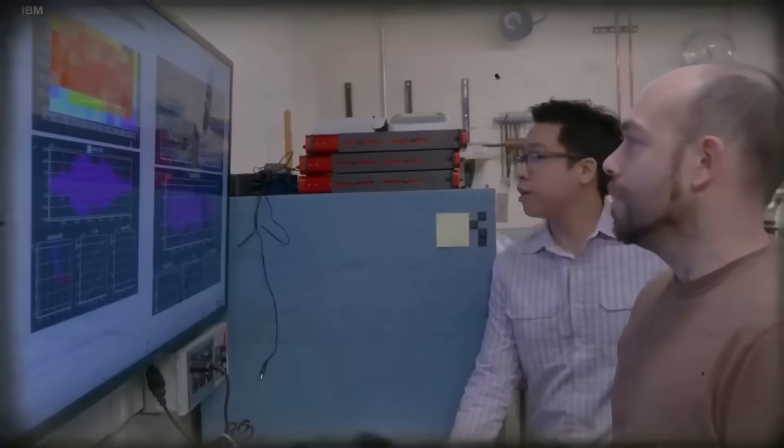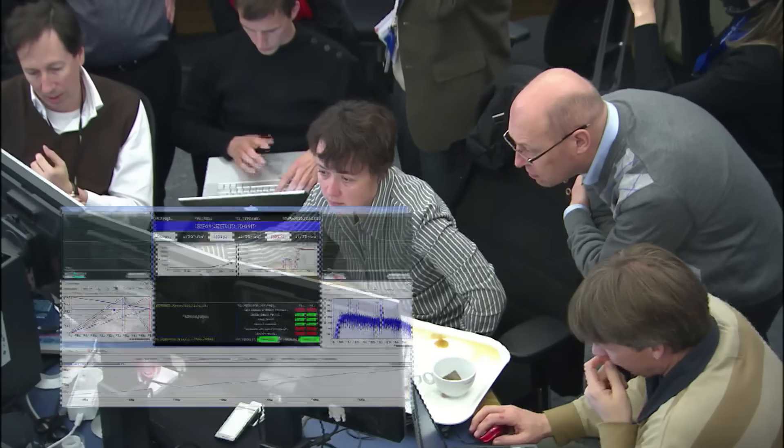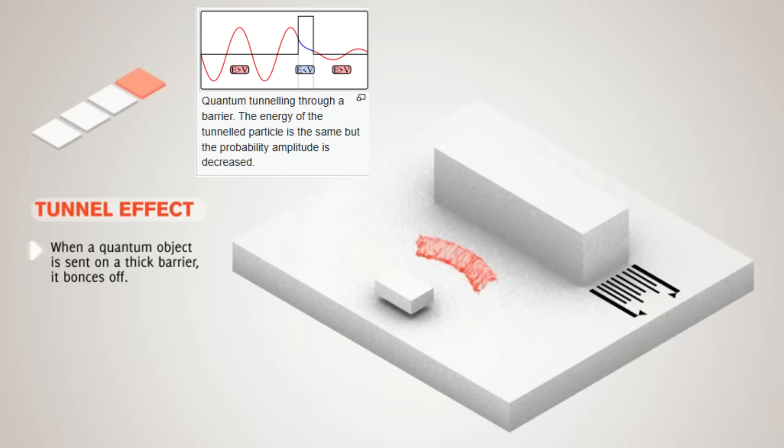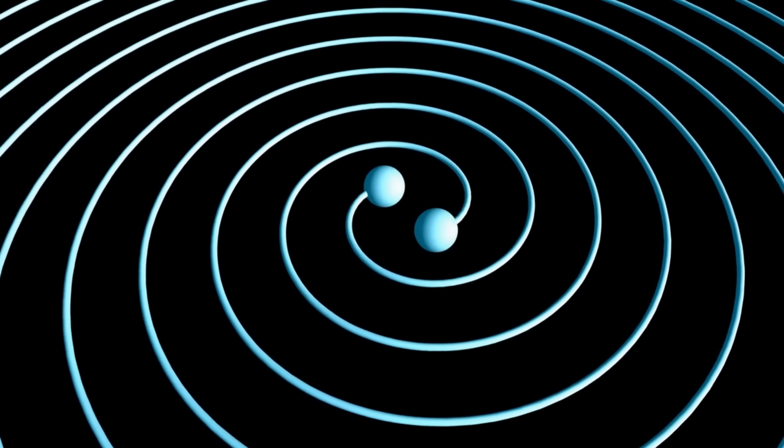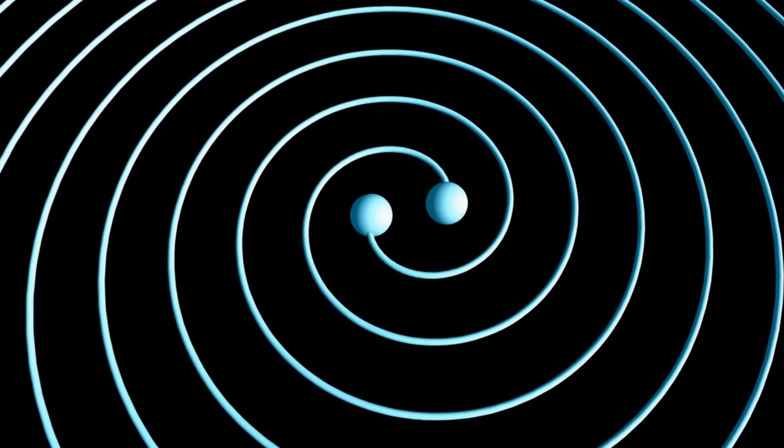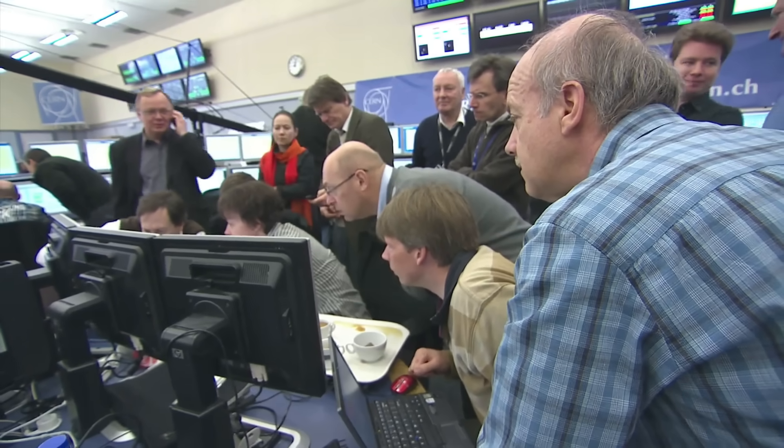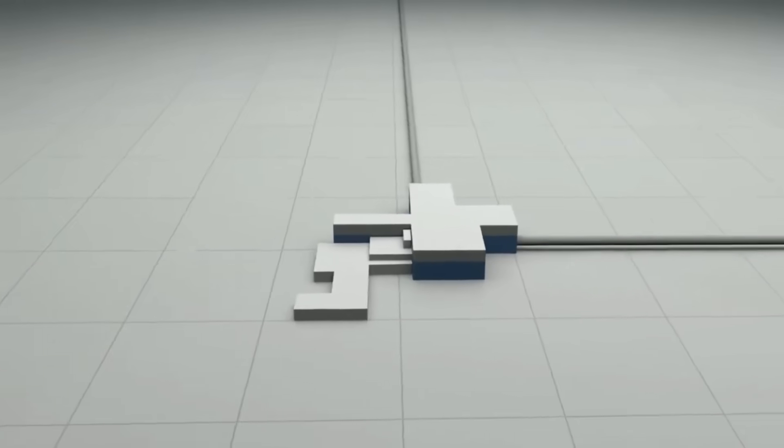This breakthrough suggests we might eventually achieve quantum computing at room temperature, potentially accelerating the timeline for practical quantum computers by decades. The CERN team has also noted peculiar space-time effects during the experiments. When particles tunneled through barriers, instruments detected minute fluctuations in the local gravitational field, something never before observed during quantum experiments. This has led to speculation about connections to quantum gravity, one of physics' greatest unsolved challenges.